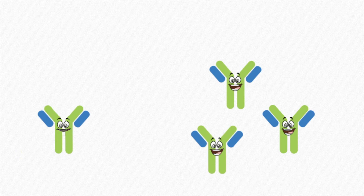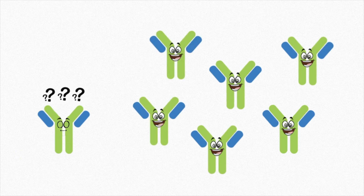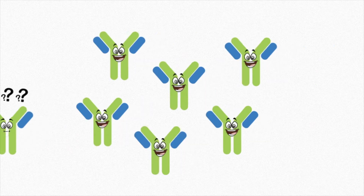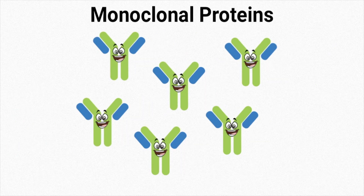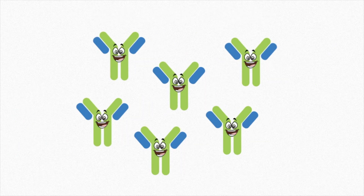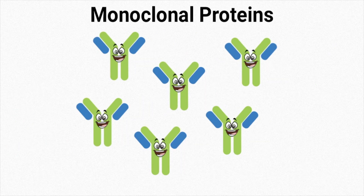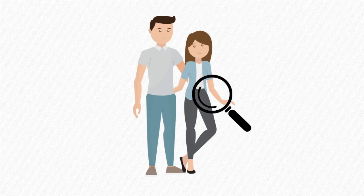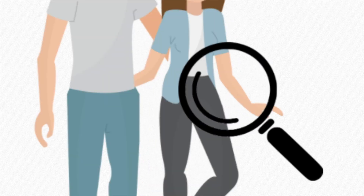Oh hey look, it's IgG kappa. Wait, hold on, this looks weird — there's actually so many of them. Well, it turns out that these are actually monoclonal proteins from a myeloma patient's blood. Let's actually take a closer look at what's happening in the body.